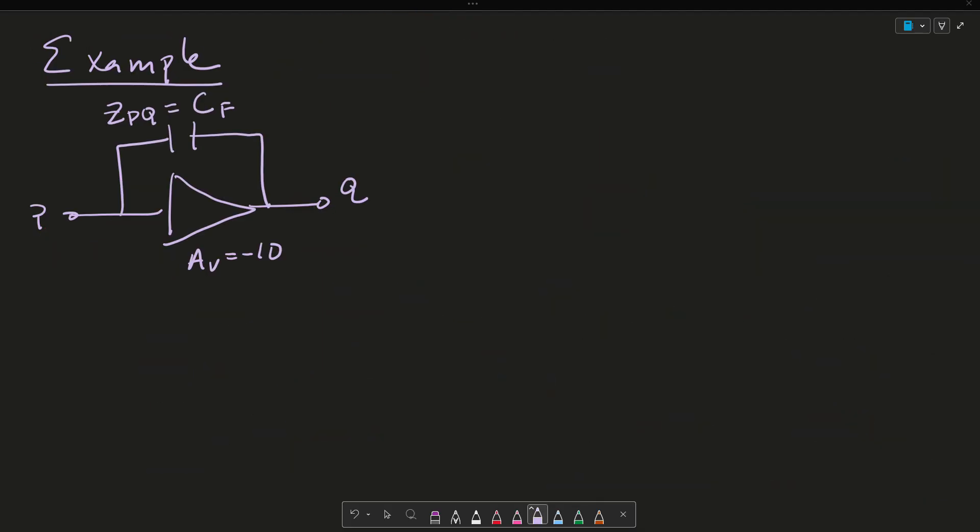So let's go ahead and take this quick example, where we have VP being my V input voltage, and VQ being my voltage output, and having an AV gain of minus 10, and a ZPQ or a feedback capacitance of CF. And in the frequency domain, remember, in order to analyze the circuit, we want to take it to the frequency domain because it's a bit easier. This is going to be 1 over CF times S. Keep in mind, this is the frequency domain.